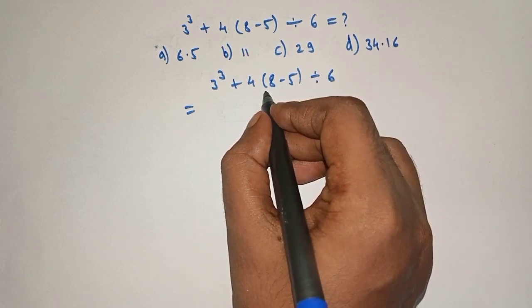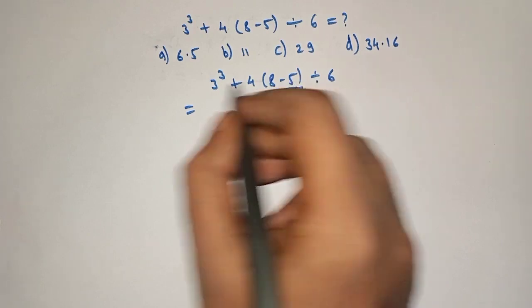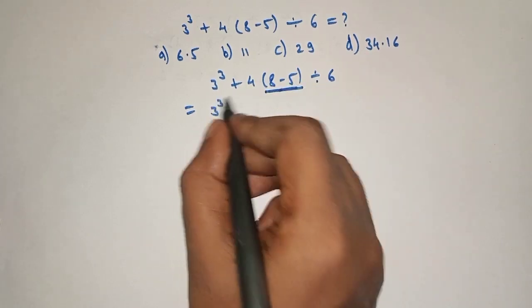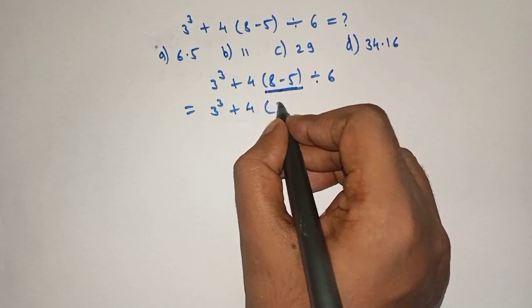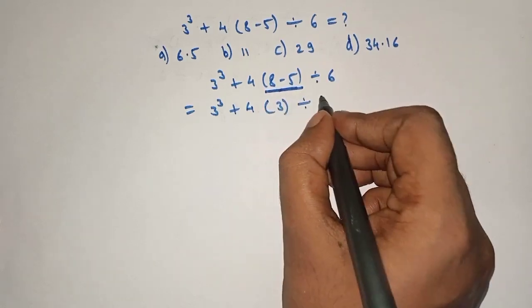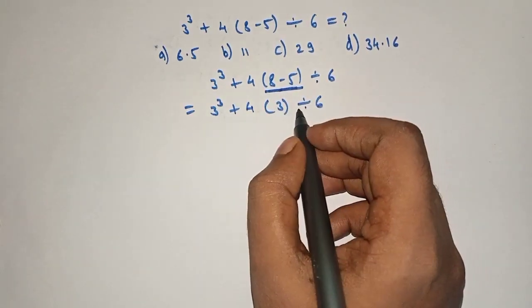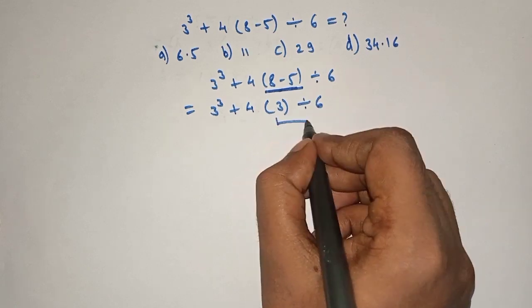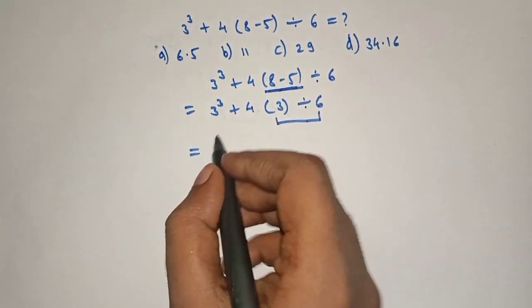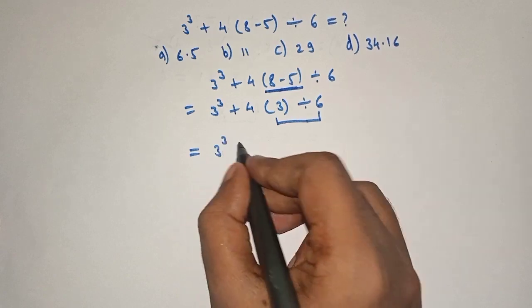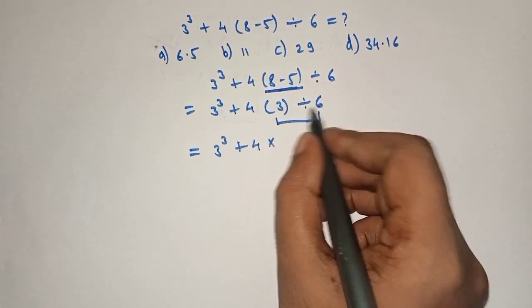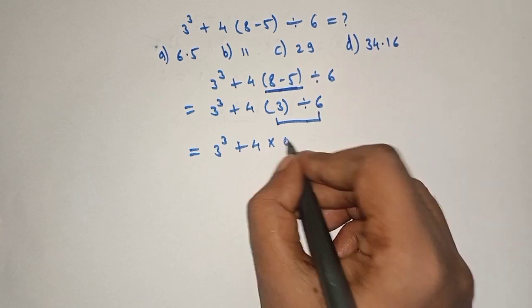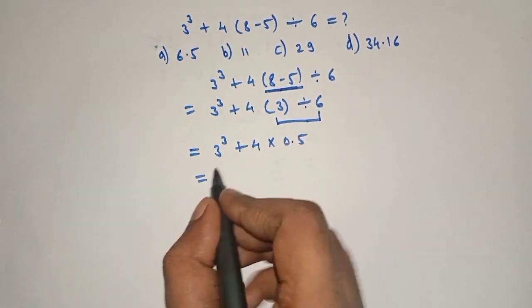So we will solve first this term: 3 raised to 3 plus 4 into 8 minus 5, which is 3, divided by 6. Now we have to divide, so we will solve this term, which is equal to 3 raised to 3 plus 4 into 3 divided by 6, which equals 0.5.